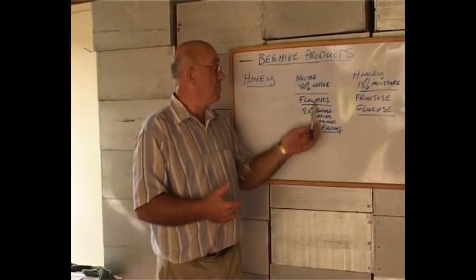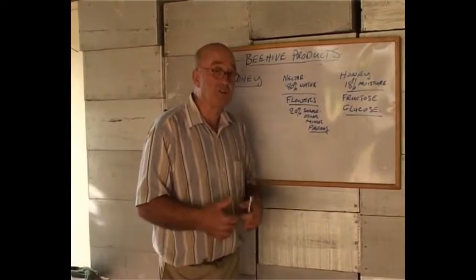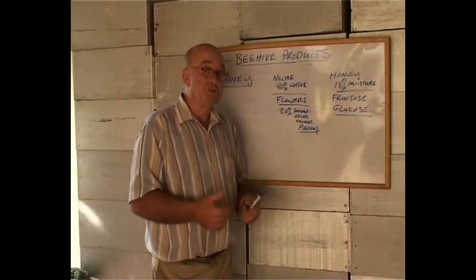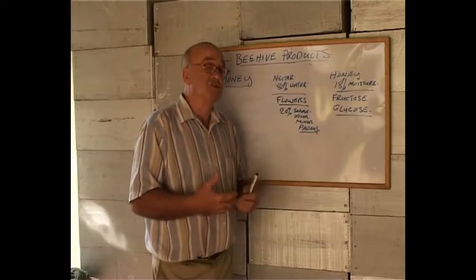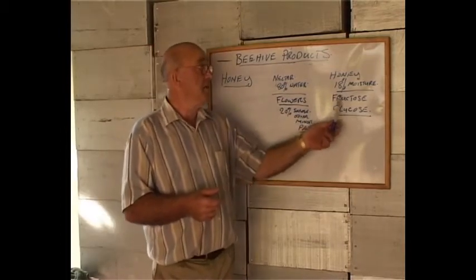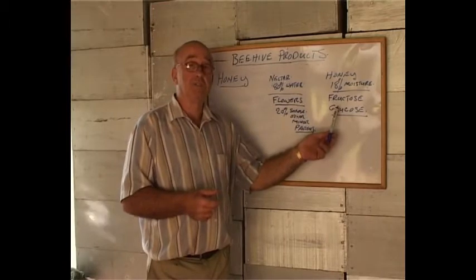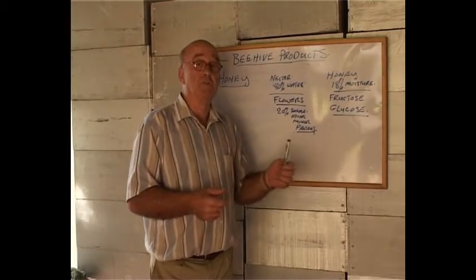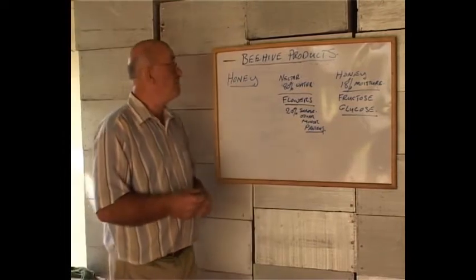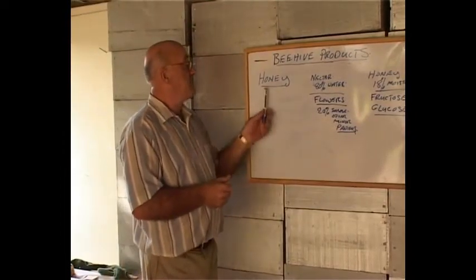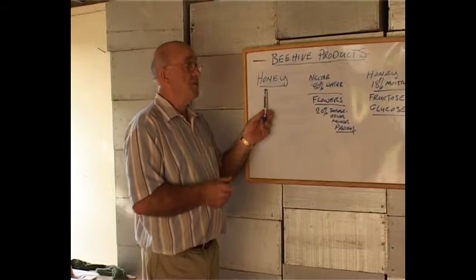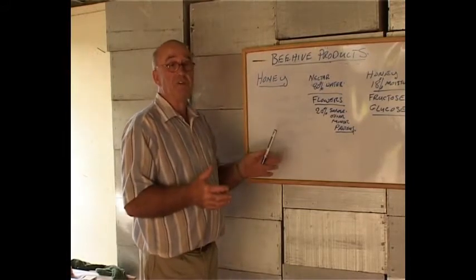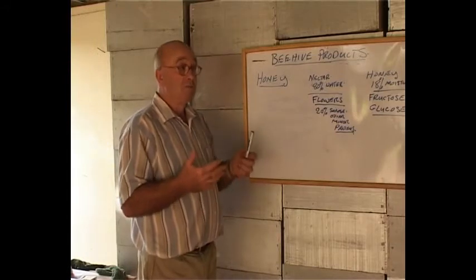If we eat sucrose we have to digest it ourselves, add the enzymes ourselves and turn it into glucose before we can gain energy. By eating honey the bees have done the work for us, and the honey glucose and fructose will give humans instant energy. So honey is the main product of the beehive, as most beekeepers in the world are honey producers.